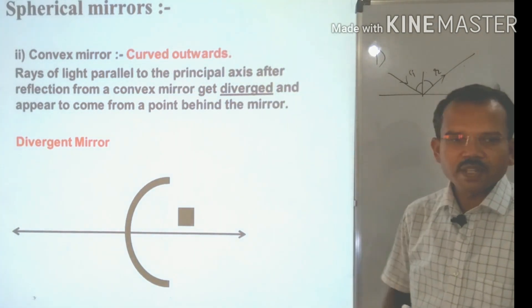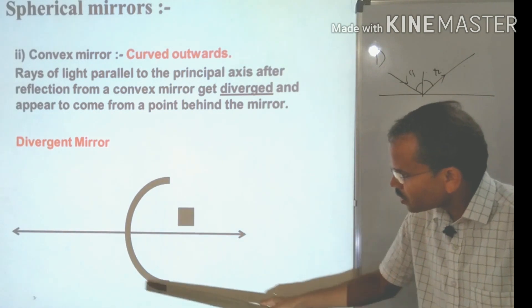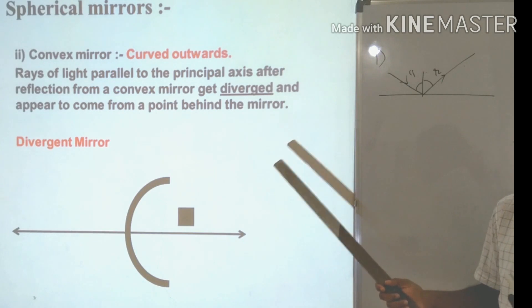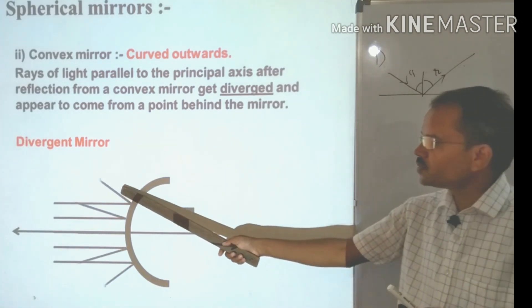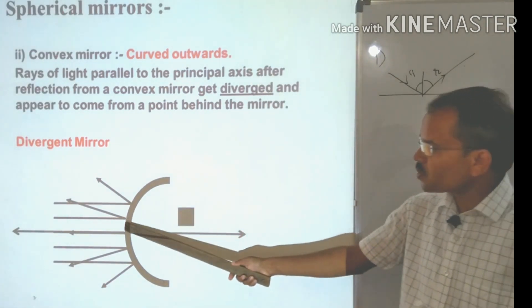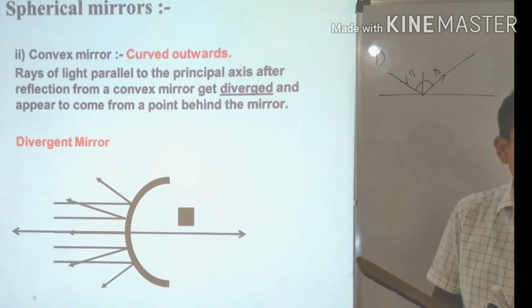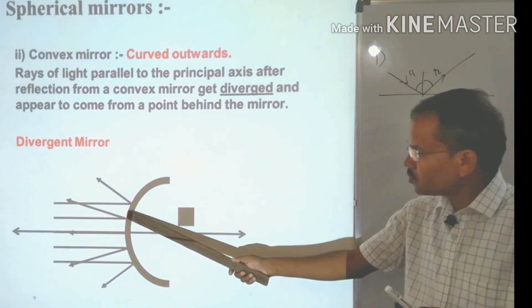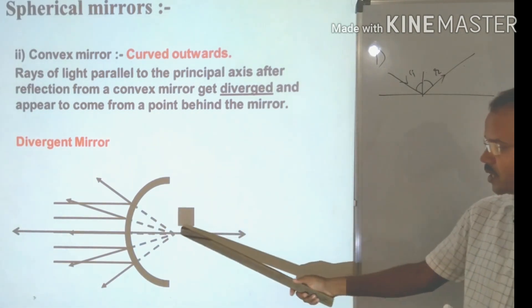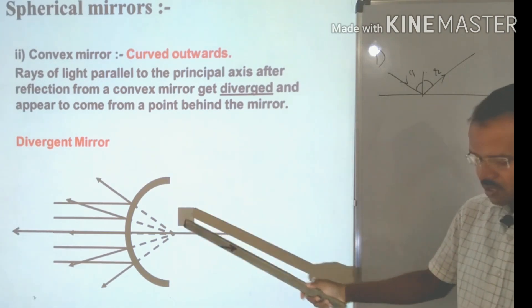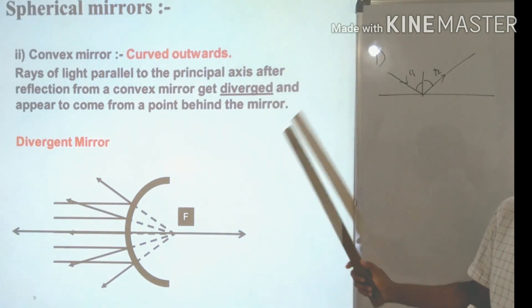The second spherical mirror is the convex mirror. In a convex mirror, the reflecting surface curves outward. When parallel incident rays fall on a convex mirror, the reflected rays diverge — they move away from each other. So a convex mirror is called a divergent mirror. Since the rays diverge and don't actually meet, we extend them in the opposite direction as imaginary lines, and they appear to meet at an imaginary focus behind the mirror.